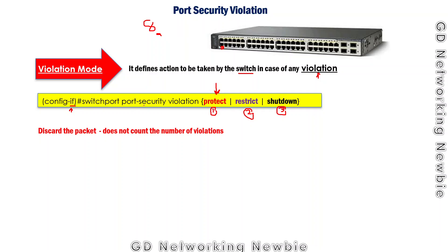If we configure the violation mode as protect — using the command switchport port-security violation protect — then in case of any violation, the port will discard the frame. It will not do anything else beyond discarding the packets, and it will not count the number of violations, even if the violation occurs once, twice, or more times.